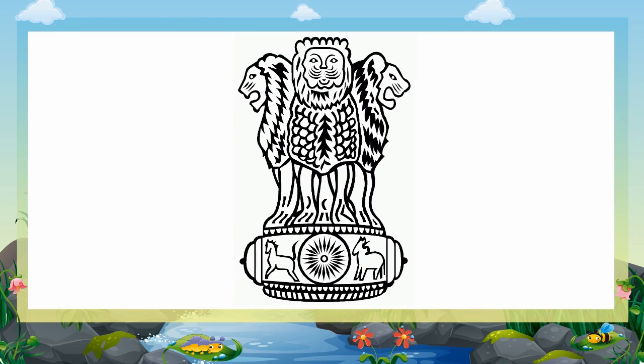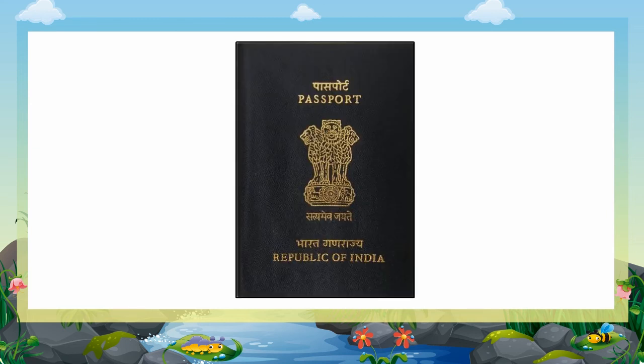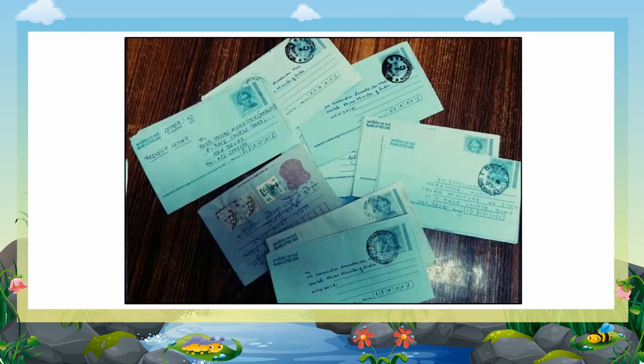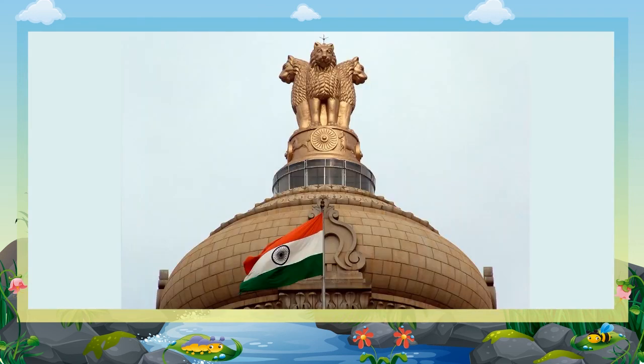The national emblem may be seen on all government documents, coins, currency notes, letters and envelopes. Our national emblem has been taken from the Sarnath Lion Capital of Ashoka. There are four lions, one is hidden from view, facing in different directions. But in the emblem we have adopted, only three can be seen.